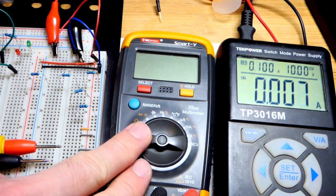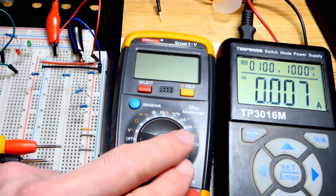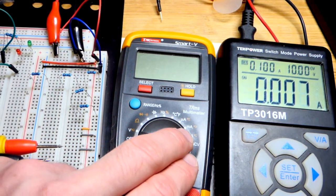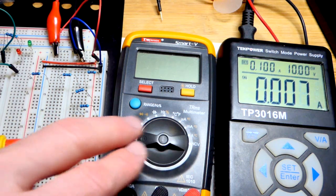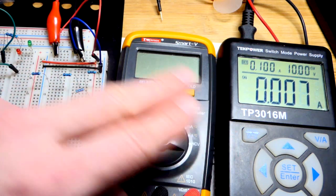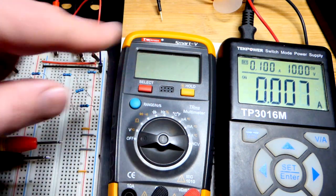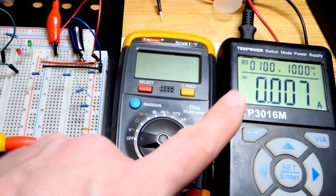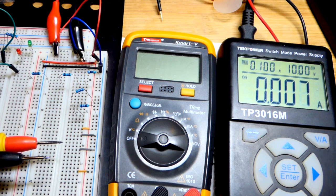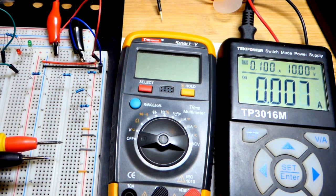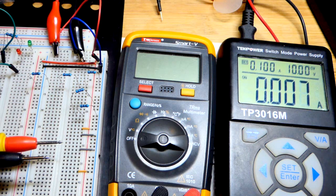Always make sure you turn off the multimeter, and definitely make sure it's not on current mode. If you think it's on voltage but turn it on to measure a power supply, the meter won't limit current, and if current isn't limited by the power supply you could damage the meter. Check out the other videos, click like, subscribe, and I'll see you in the next video.